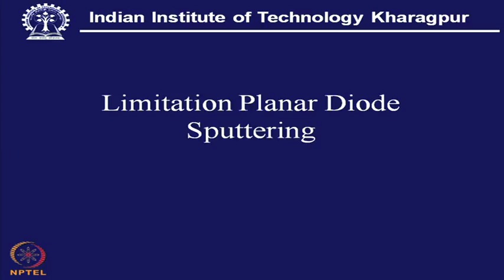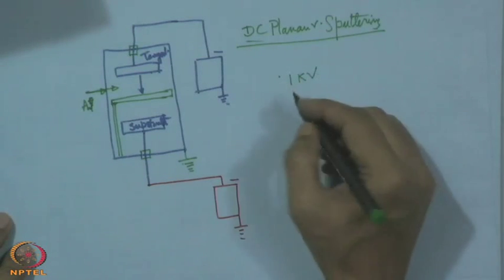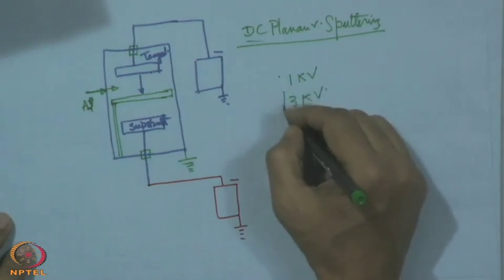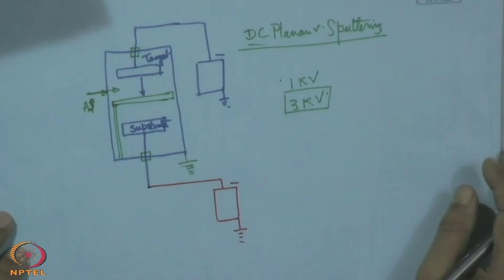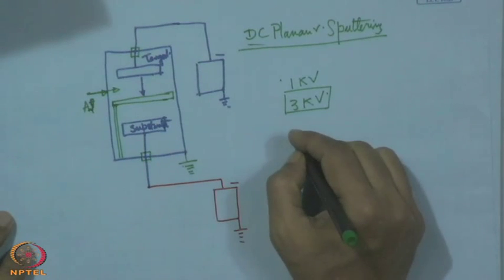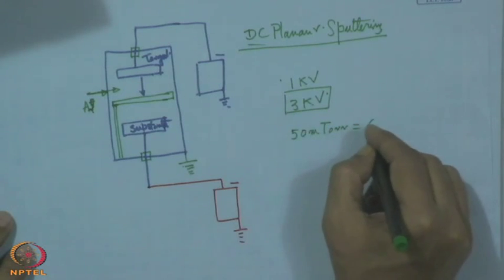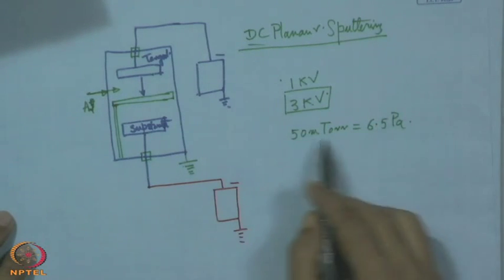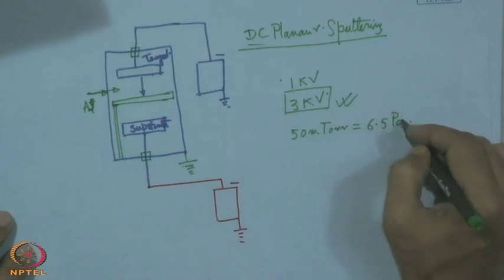Number 1: to initiate this discharge, a very high voltage is required — on the order of a few kilovolts, reasonably around 3 kV. And argon pressure may be 50 milli-torr, which is equivalent to 6.5 Pascal. So high voltage and high pressure are two parameters at the high end.